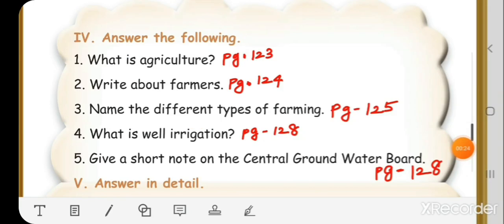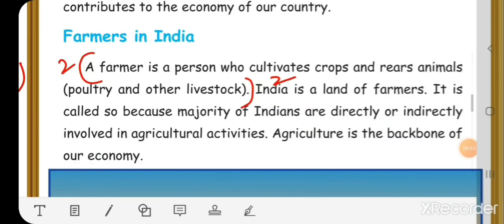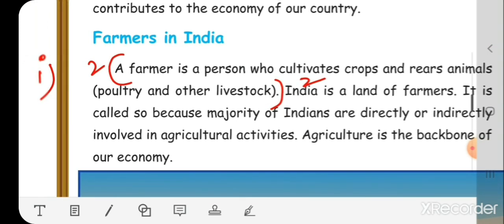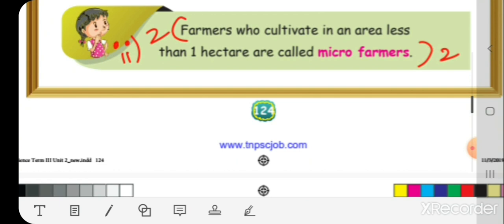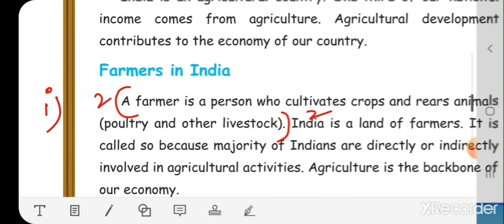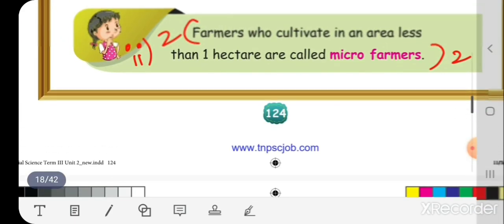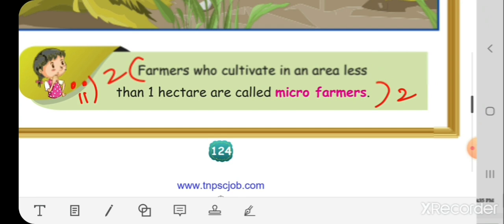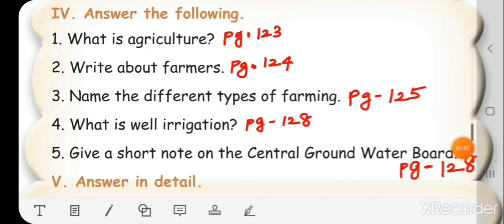Second question: Write about farmers. This answer is on page number 124. A farmer is a person who cultivates crops and rears animals, poultry, and other livestock. That's the first point. You have another point also here: farmers who cultivate in an area less than one hectare are called micro farmers. You have to write both points, children.